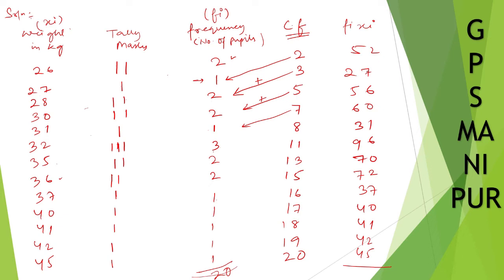Adding: 52 plus 27 is 79, plus 56 is 135, plus 60 is 195, plus 31 is 226, plus 96 is 322, plus 70 is 392, plus 72 is 464, plus 37 is 501, plus 40 is 541, plus 41 is 582, plus 42 is 624, plus 45 is 669. So it is 669.